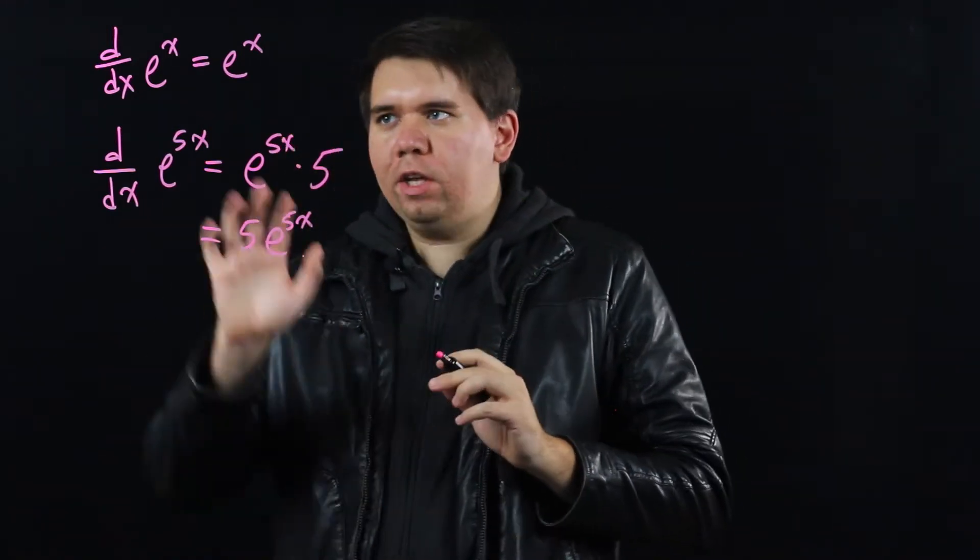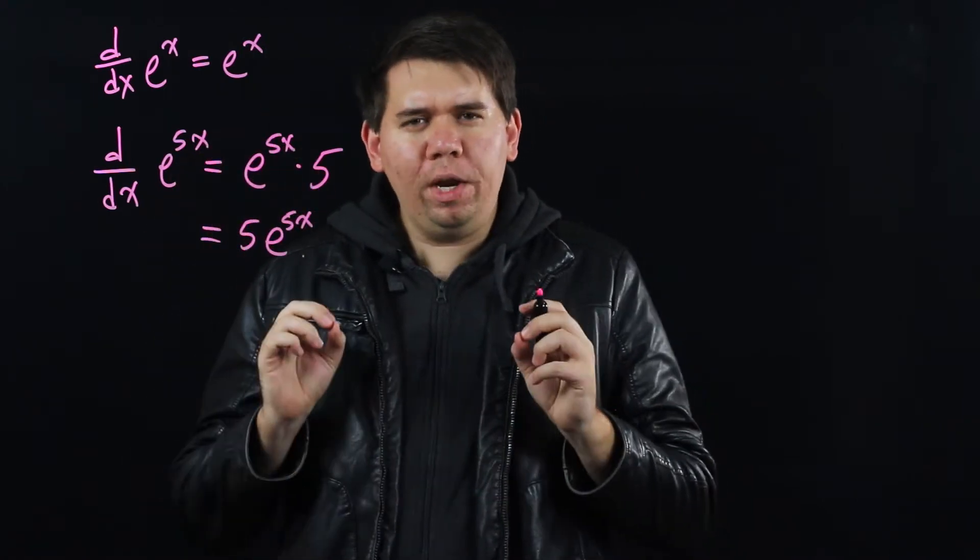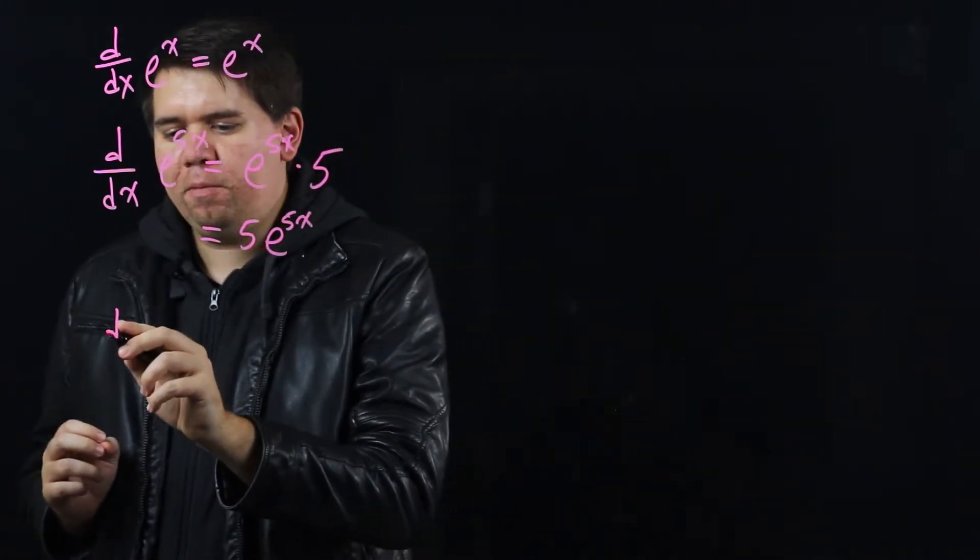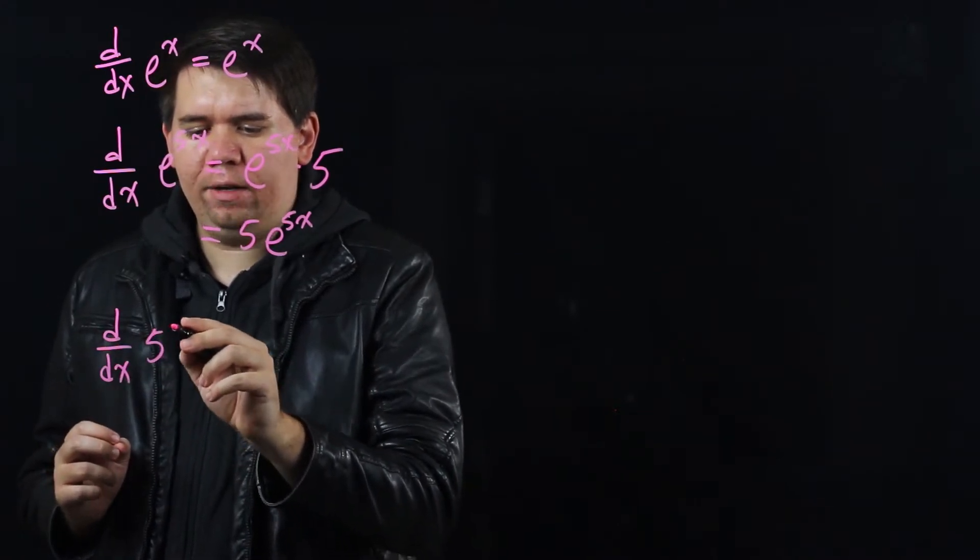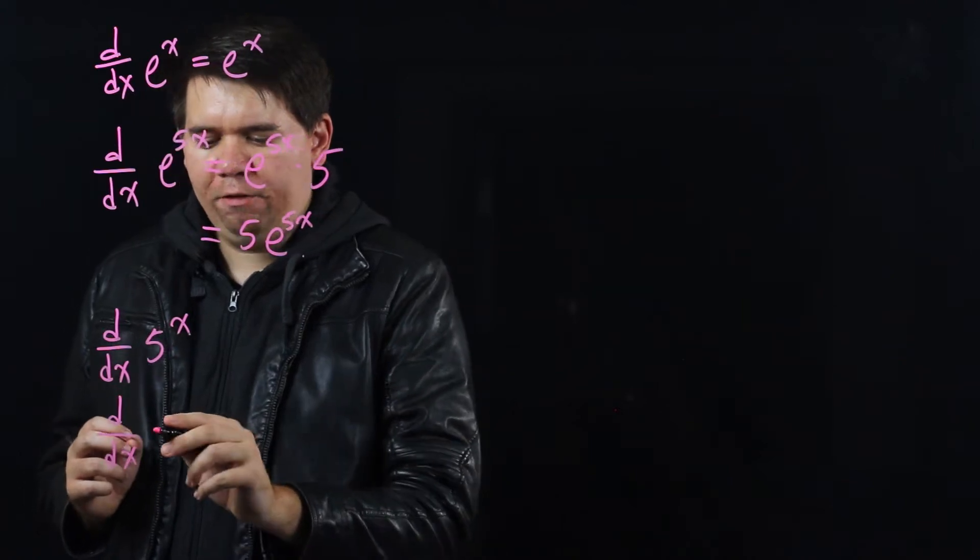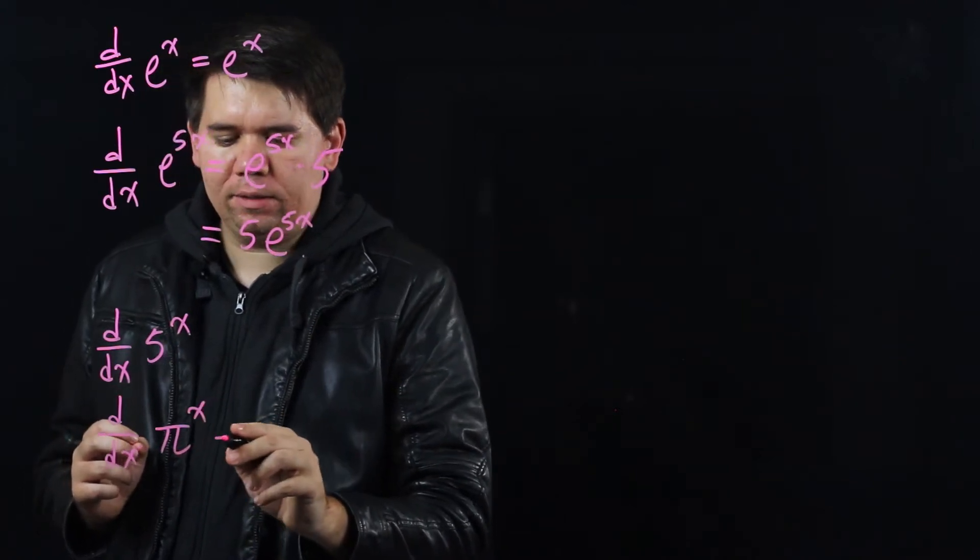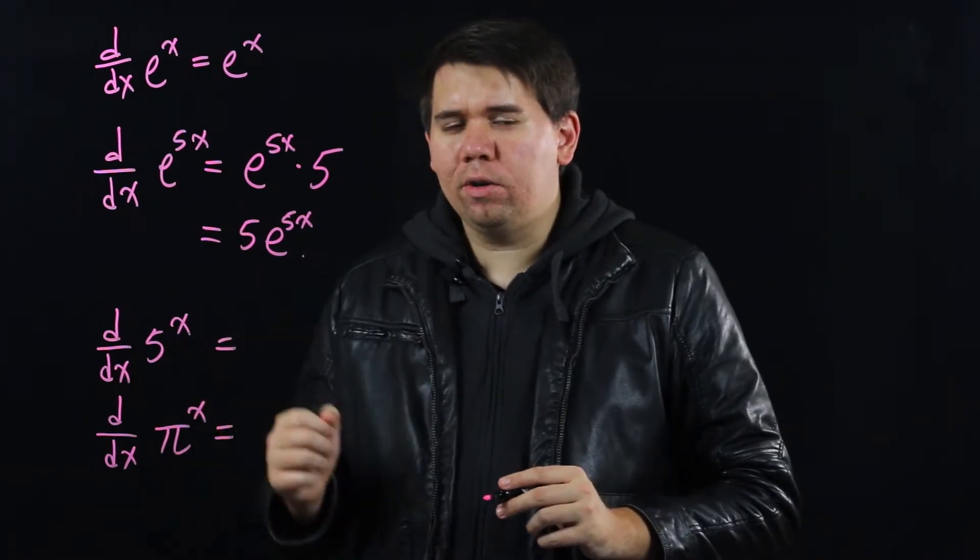So we're really good at working with e to the x and e to some other function. But what if we have some other power to the x? Like what is the derivative of 5 to the x? Or what is the derivative of pi to the x? Or any other number to the x? How do we find those derivatives?